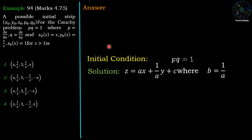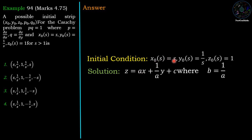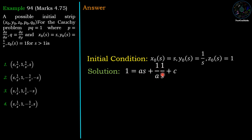Now we have given initial conditions: x₀(s) = s, y₀(s) = 1/s, z₀(s) = 1. Substituting x = s, y = 1/s, z = 1 into the solution gives: 1 = as + (1/a)(1/s) + c, which simplifies to 1 = as + 1/(as) + c.